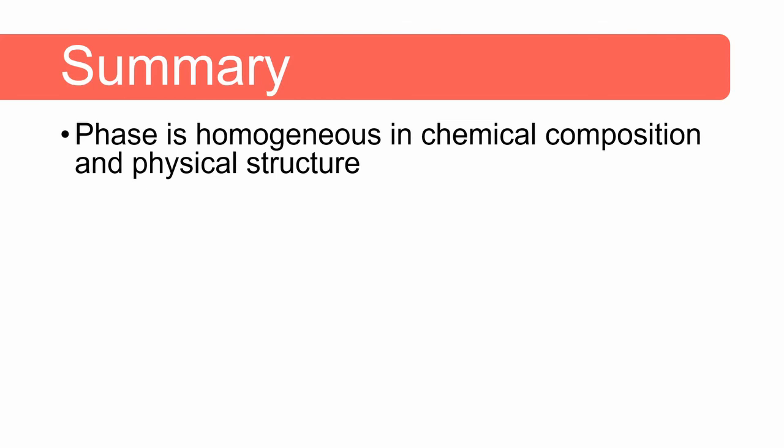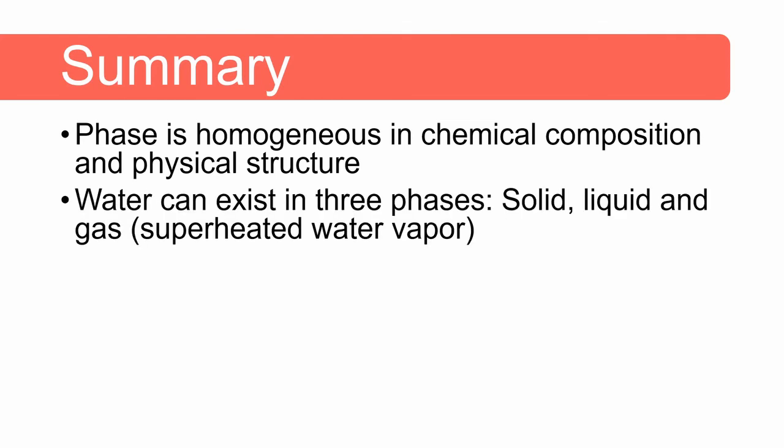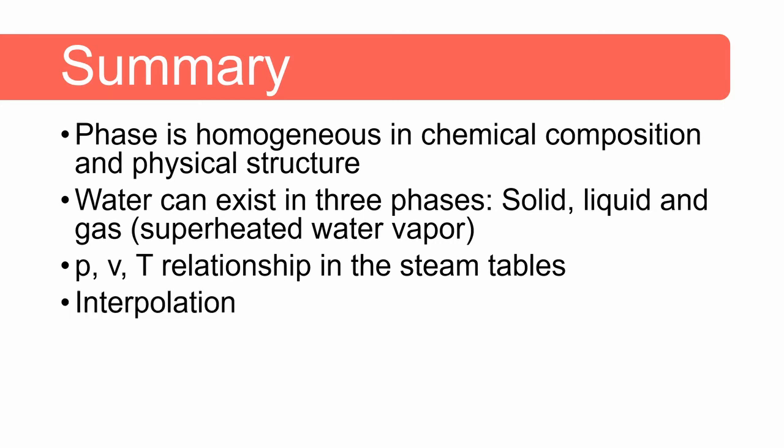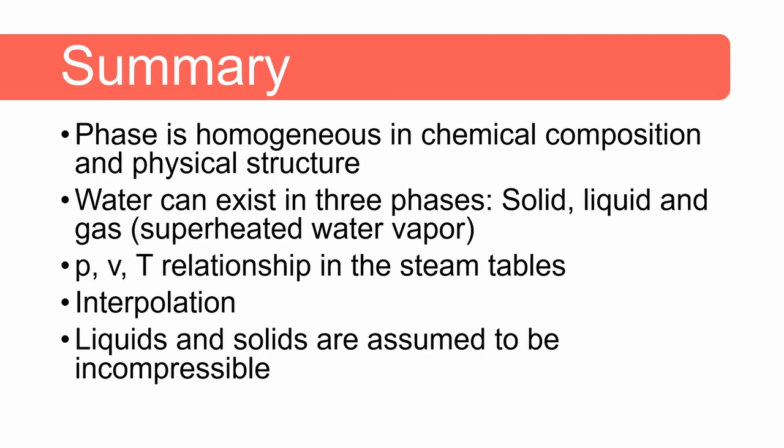In summary, a phase is homogeneous in chemical composition and physical structure. Water can exist in three phases: solids, liquids and gas which is usually superheated water vapor. Pressure, specific volume and temperature has a relationship which you can find in the steam tables for real gases where the ideal gas law does not apply. For values that are not shown in the steam tables we can use interpolation to calculate those values. Liquids and solids are assumed to be incompressible.